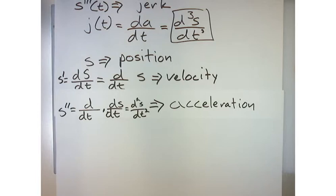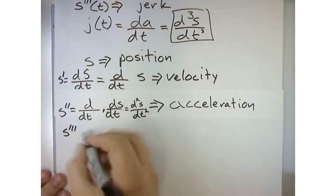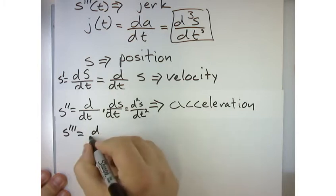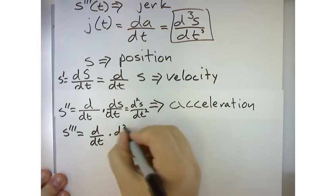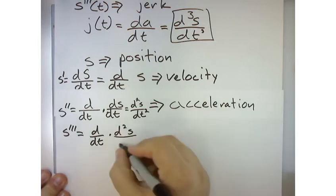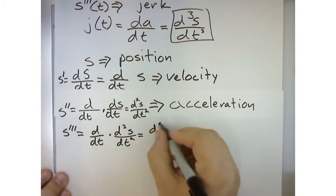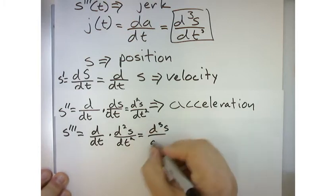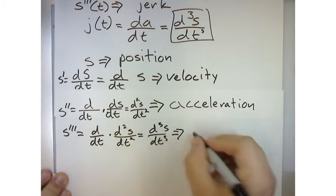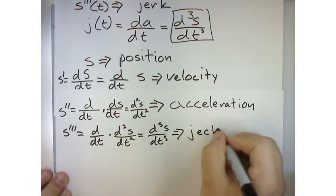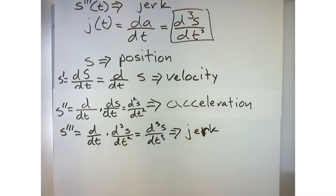You guys with me so far? So then jerk would be s triple prime, which would be d dt, which is the derivative with respect to T of d squared s dt squared. Which is equal to d3 s or dt cubed, which is another way to write jerk. Yeah, I got a little carried away with the marker there. All right.